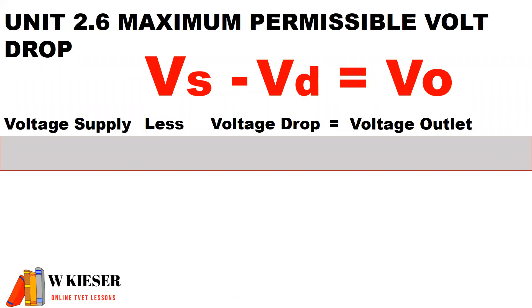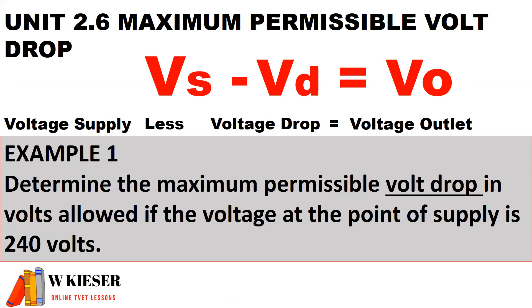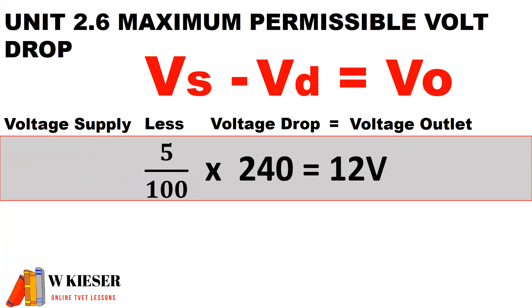Now we're going to get some calculations for this module. The first type of calculation is calculating the maximum permissible volt drop. The formula is: voltage supply minus the volt drop equals the outlet voltage. It is important to note that the volt drop cannot be less than 5% of the supply. In this example, determine the maximum permissible volt drop in volts if the voltage at the point of supply is 240 volts. We calculate 5/100 × 240 volts. Therefore, the volt drop cannot be greater than 12 volts.